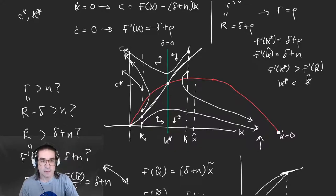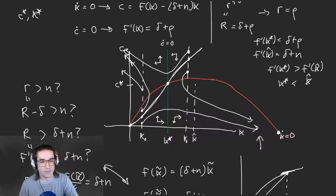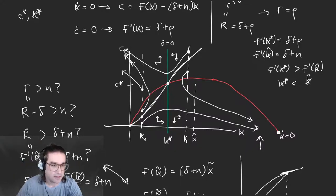Our phase space in this case is capital K and consumption. Consumption isn't really a state variable — you could move consumption around continuously all the time. That could happen if you had a utility function where you value switching things up a lot, like you get easily bored. But generally we have the opposite here because people want to consumption-smooth — they have concave utility. So that's the baseline assumption.